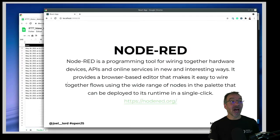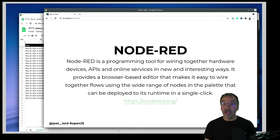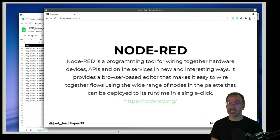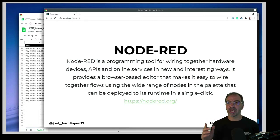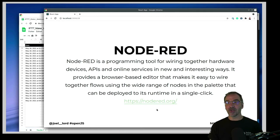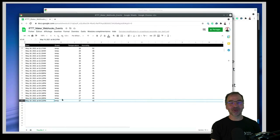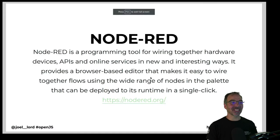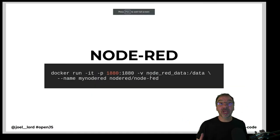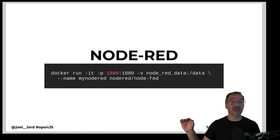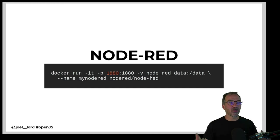Now let's talk about Node-RED. Node-RED is a programming tool for wiring together hardware devices, APIs, and online services in new and interesting ways. It provides a browser-based editor that makes it easy to wire together flows using a wide range of nodes in a palette, deployable in a single click. You can find more at nodered.org. If you have Docker installed, it's actually very easy — just run this command, it starts a web server on port 1880, and Node-RED is installed and ready to use.